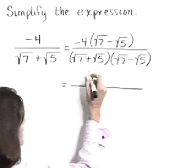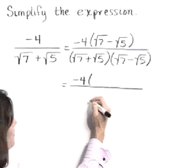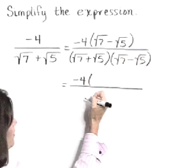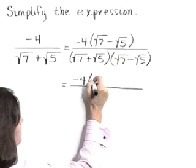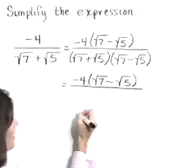Now that numerator, I'm going to leave just as it is for now. I'm thinking that I might be able to cancel something out later. So just rewrite your numerator as negative 4 times the square root of 7 minus the square root of 5.